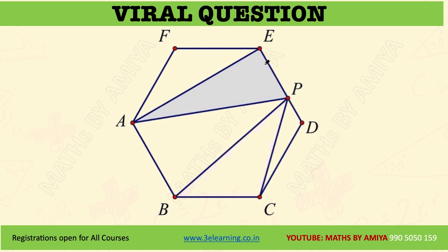What we have to find? We have to find the ratio of EP to PD, if the area of this part and this part — meaning these triangles — are the same.